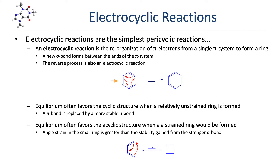Here we see an example of cis-1,3,5-hexatriene cyclized to give 1,3-cyclohexadiene. As with all pericyclic reactions, the electrons flow in a cyclic manner in a single, concerted mechanistic step. The equilibrium of an electrocyclic reaction is greatly influenced by the size of the ring formed. Formation of unstrained 5- and 6-atom rings generally favors the cyclic structure, due to the added stability introduced by replacing a weak pi bond with a stronger sigma bond.